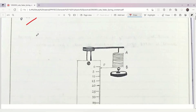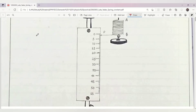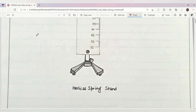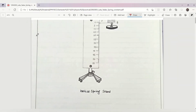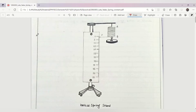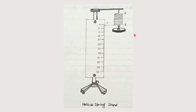This is the diagram for the experiment. Coming to the procedure part: hang the spring AB vertically from a rigid support. The lower end of the spring should have a hanger or scale pan with a pointer attached to it. Set up a vertical meter scale with a clamp so that the position of the pointer can be read on it. Take care that the scale is not touching the pointer.